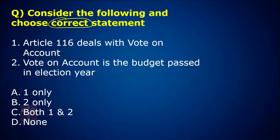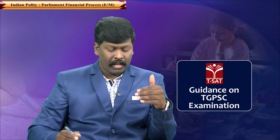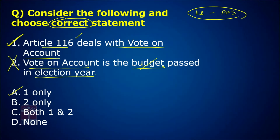Next question: Consider the following and choose the correct statement. Article 116 deals with vote on account. Vote on account is not the budget passed in the election year — that is a common mistake. The answer is A. Article 116 deals with vote on account, but vote on account is actually the advanced budget passed to meet the expenses of the government till the budget comes into force.